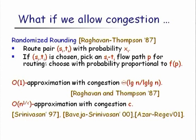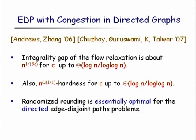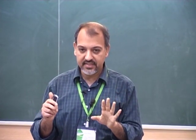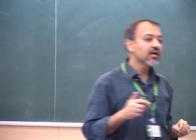For directed graphs, this randomized rounding approach is essentially the best possible — there is a hardness result of N^(Ω(1/C)) for EDP with congestion C in directed graphs, and achieving a constant-factor approximation requires congestion at least log N / log log N. For directed graphs, the question seems qualitatively well understood.